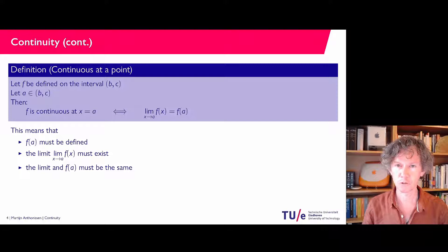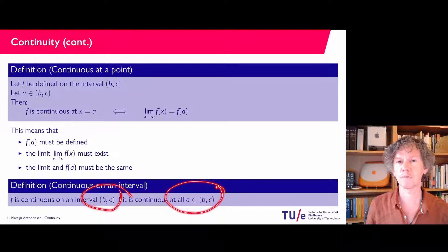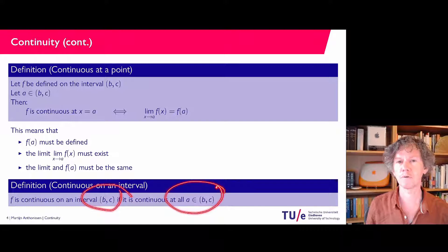A function is continuous on an interval if it is continuous for all points in that interval. So you pick a certain interval, pick any point in that interval, and the function has to be continuous there.